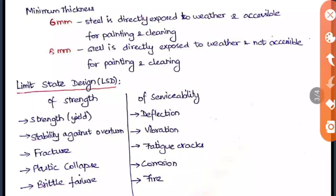In limit state design, the limit states are split into strength and serviceability. Strength conditions include yielding, stability against overturning, fracture, plastic collapse, and brittle failure. Serviceability conditions include deflection, vibration, fatigue, cracks, corrosion, and fire. In objective questions, they may ask which is not a serviceability condition, so knowing these categories is important.